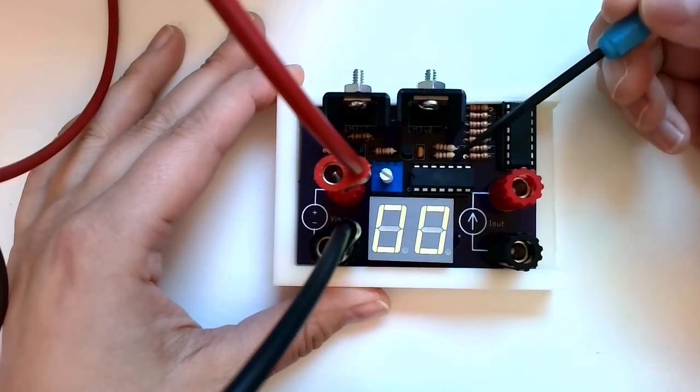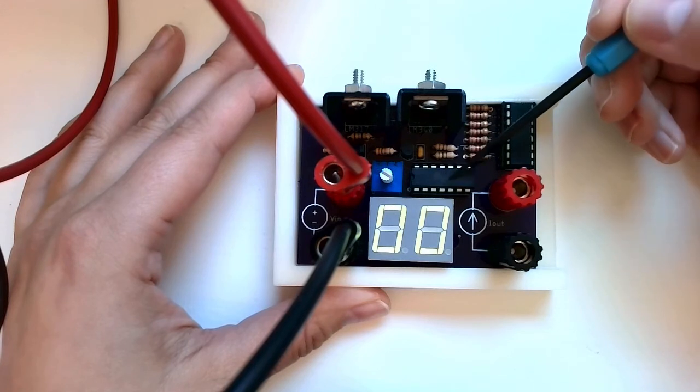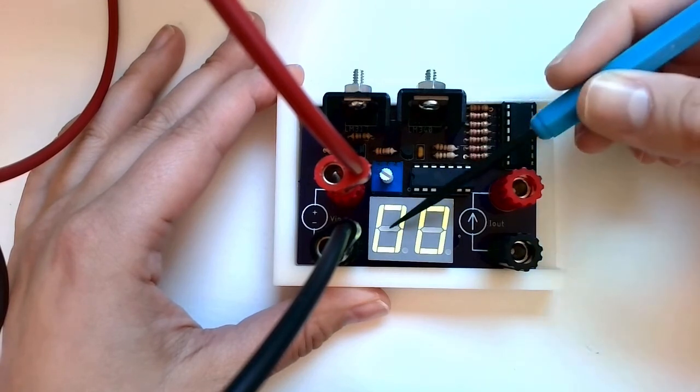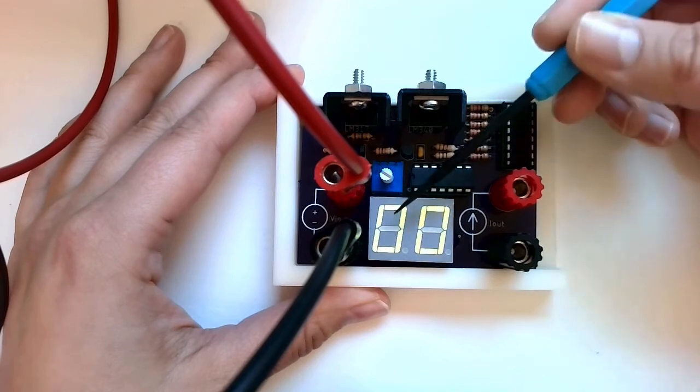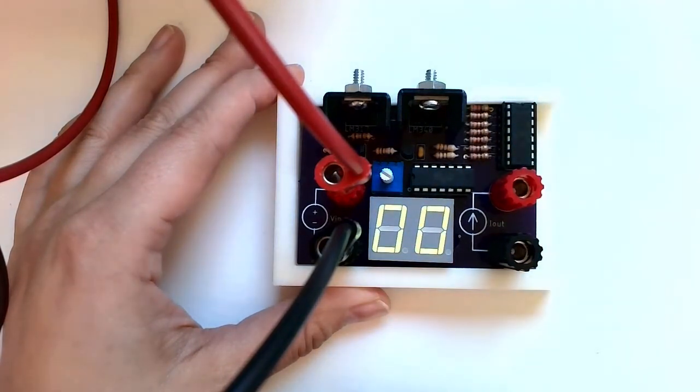The issue with that is that the resistances have some tolerance to them. The microcontroller uses integer based logic and not floating point logic. This precision of the readout is not going to be perfect.